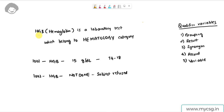Let's say we have HGB, which stands for hemoglobin — a laboratory test which belongs to the hematology category. For subject 1001, hemoglobin was performed and the result was 15 grams per deciliter, with a reference range of lower limit 14 and upper limit 18. For subject 1002, the hemoglobin test was not done because the subject refused the test.